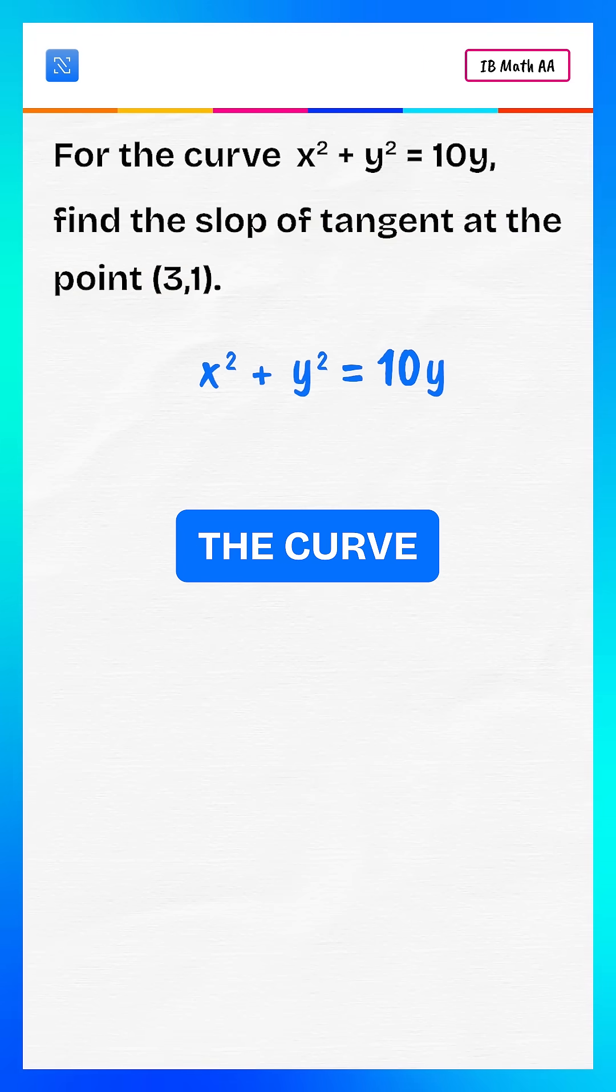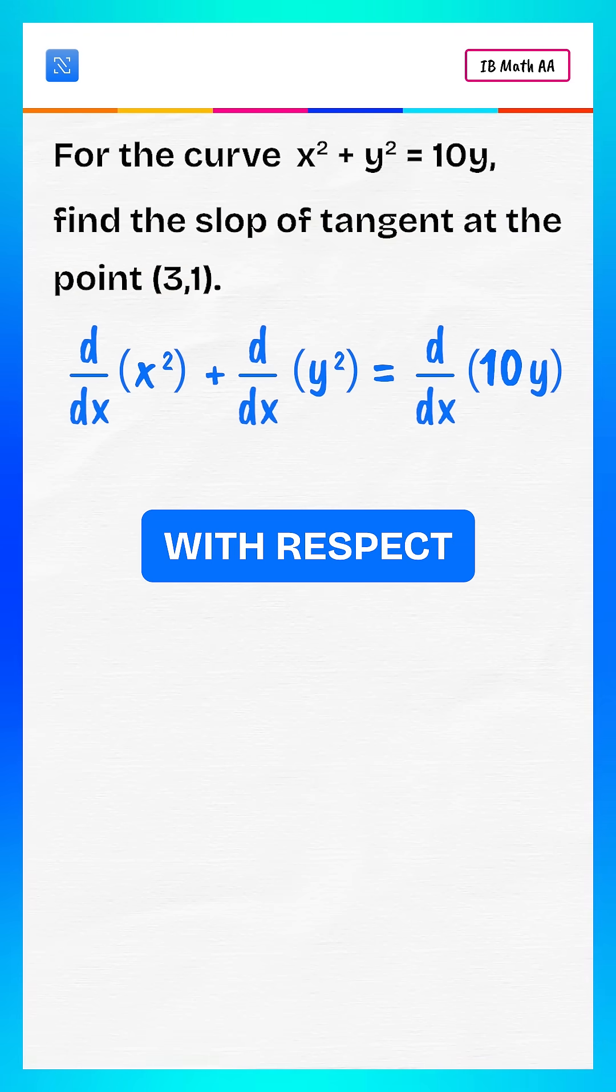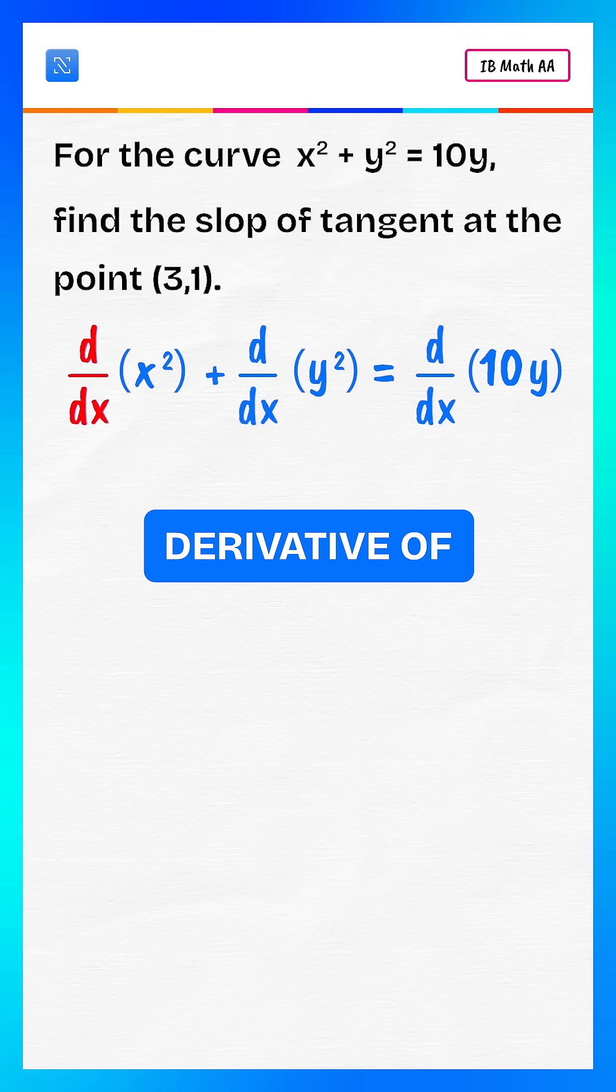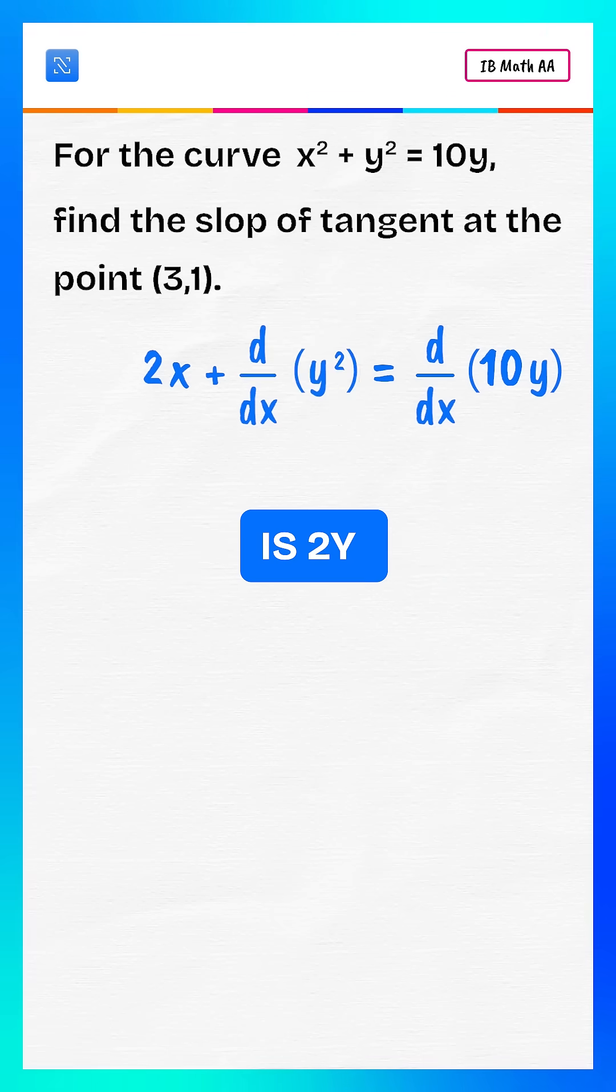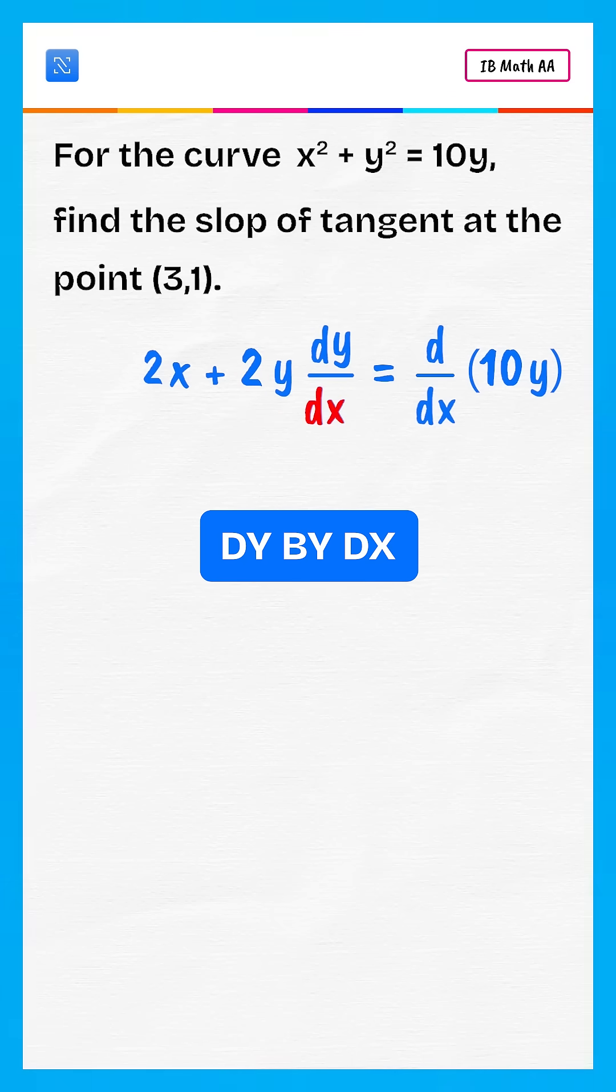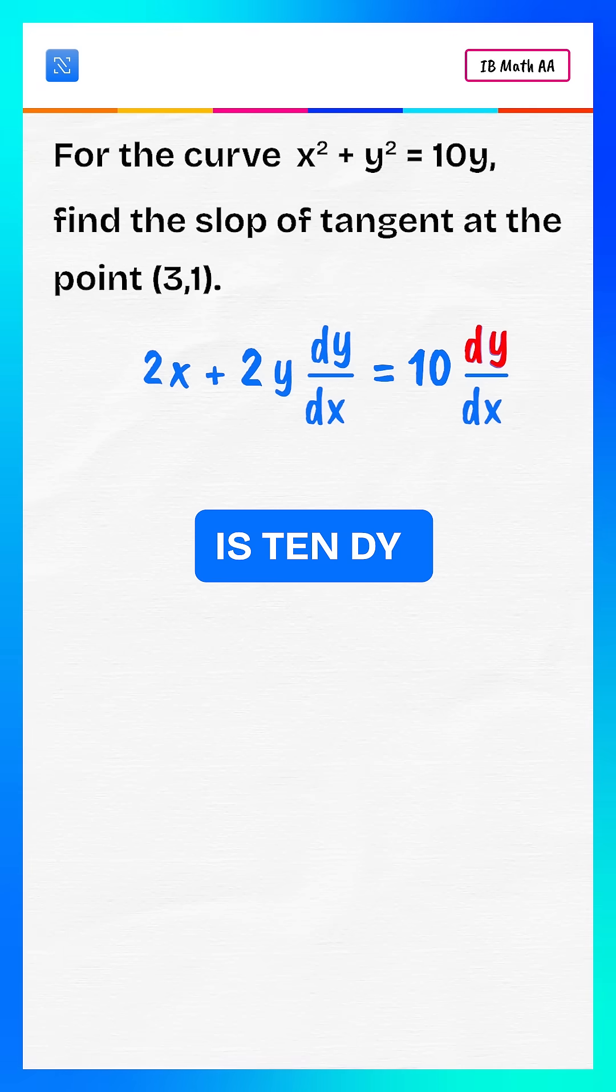We are given the curve. Differentiate both sides with respect to x. Derivative of x squared is 2x. Derivative of y squared is 2y dy/dx, and derivative of 10y is 10 dy/dx.